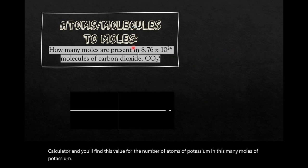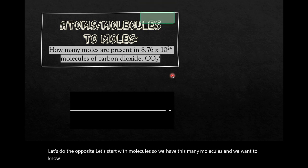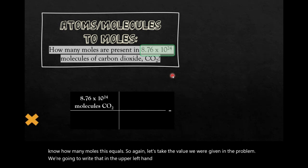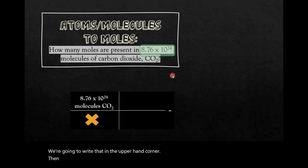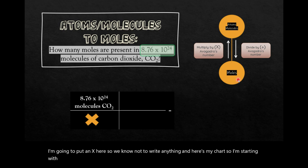Now let's do the opposite. Let's start with molecules. So we have this many molecules, and we want to know how many moles this equals. So again, let's take the value we were given in the problem. We're going to write that in the upper left-hand corner. Then I'm going to put an X here so we know not to write anything. And here's my chart. So I'm starting with molecules in this case, and I'm going to moles.